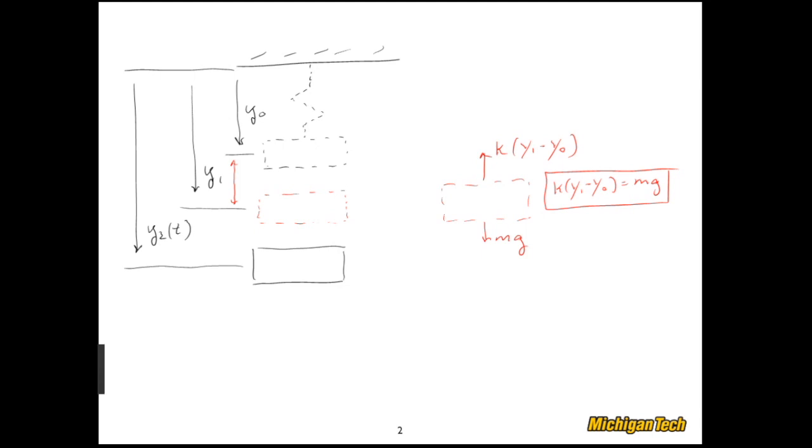Now let's do the free body diagram of the actual mass. Well, let's see. What all does it have acting on it? It has this externally applied force, f. So I can draw that in, f. It also has gravity, mg.